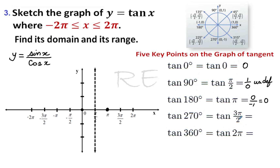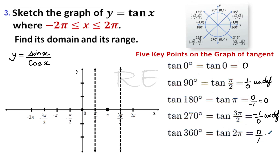Tangent three pi over two is equal to negative one over zero, and is undefined — vertical asymptote. Tangent two pi is equal to sine two pi, which is zero over one, so the answer is zero.